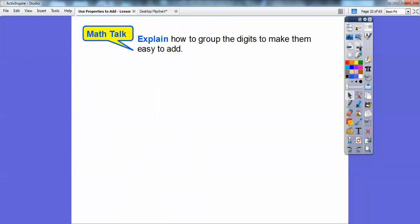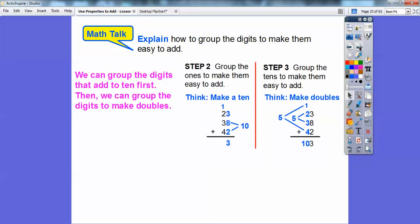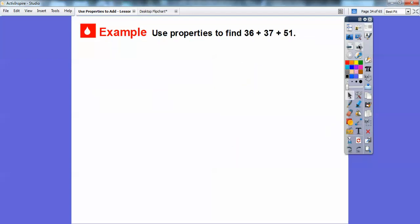Let me explain how to group the digits to make them easier to add. In the last problem, we grouped the digits to get the 10 first, and a 10 is a nice friendly number. 10 would then add to this 3 to get us 13. Then we can group the digits in this part and make doubles. This is 5, this is 5, and 5 and 5 is 10. These are just some strategies to add numbers faster.